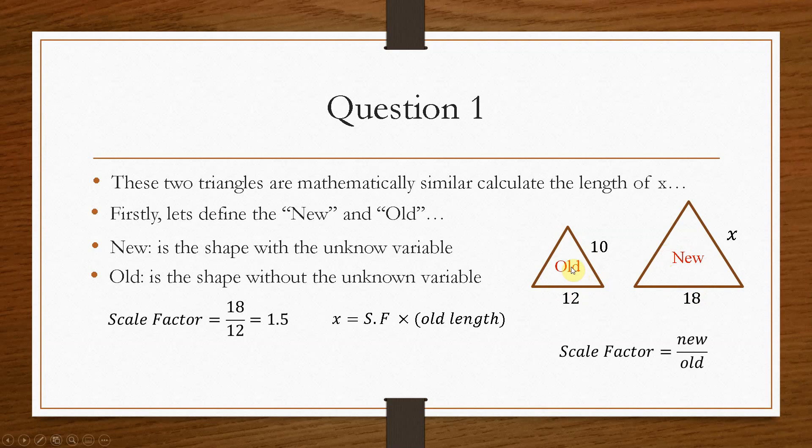And then the value of x can be found by multiplying the scale factor, which we found before, by the corresponding side on the old shape. So this side here, and this side here, x is 1.5 times this length here. So it becomes a scale factor multiplied by the old length, which is 10. So 1.5 times 10 will give you 15 centimetres. And that's how you would go about solving a scale factor for linear lengths.